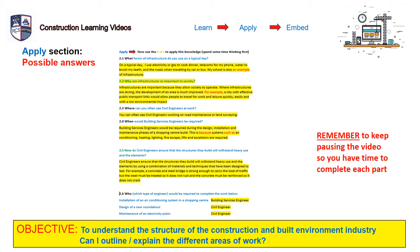Where can you often see civil engineers at work? You can often see civil engineers working on road maintenance or land surveying — but send me your answers so I can give you feedback, because those are not the only places you'll see them. When would building services engineers be required? Building services engineers would be required during the design, installation, and maintenance phases of a shopping centre build, because systems such as air conditioning, heating, lighting, fire escapes, lifts, and escalators are required.